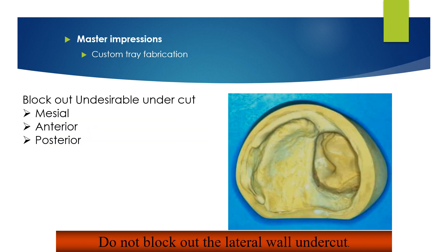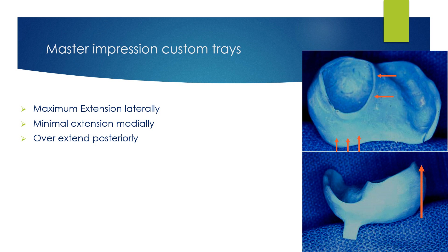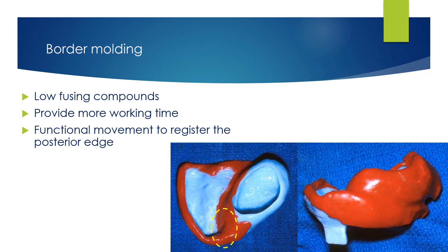The master impression is registered using a custom tray. On the primary cast, medial, anterior, and posterior undercuts must be blocked out, while the lateral wall undercut should be left as is. The fabricated custom tray should have maximum extension laterally, minimal extension medially, and be slightly overextended posteriorly. Border molding the custom tray should be done using low-fusing compounds, which provide more working time and allow functional movement to register the posterior edges.